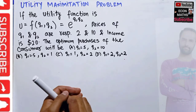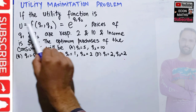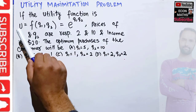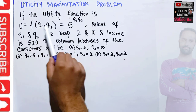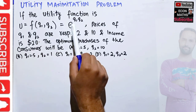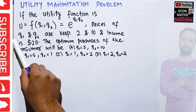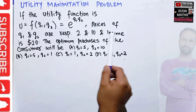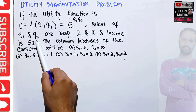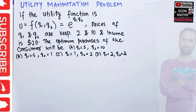In this video we will solve a numerical problem on utility maximization. The utility function is given as u = e^(q1 * q2), where utility is a function of two goods q1 and q2. Prices of q1 and q2 are given as 2 and 10 respectively, and the income of the consumer is $20. We have to find out the optimal bundle the consumer will purchase.